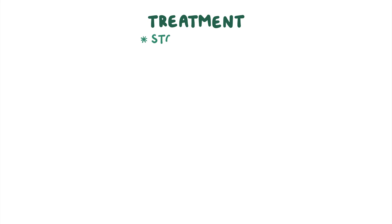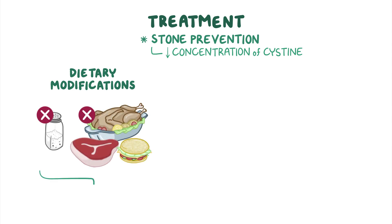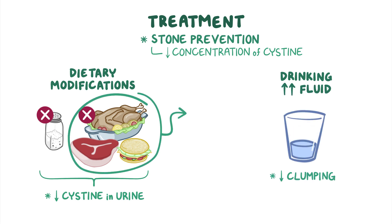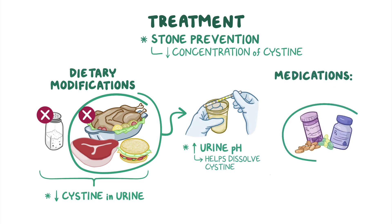Treatment is based on stone prevention by lowering the concentration of cysteine. Dietary modifications like restricting the intake of salt and animal proteins can help reduce the amount of cysteine in urine. Drinking large amounts of fluid throughout the day can minimize clumping. Restricting animal protein intake also makes the urine more alkaline, helping to dissolve cysteine. Some medications can also make urine more alkaline, like potassium citrate and acetazolamide.